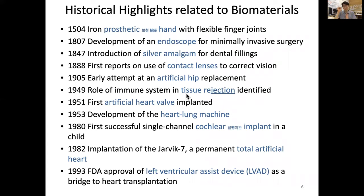Tissue rejection means that if an artificial biomaterial enters the tissue, our immune system may reject it. Similarly, when an organ is transplanted from one person to a host, the host's immune system recognizes it as foreign and tries to reject it — still a big problem in organ transplantation. In 1951, the first artificial heart valve was implanted, which was very significant since heart valve failure can be fatal. In 1953, a heart-lung machine was developed for use during full heart transplantation, to temporarily replace heart and lung function.